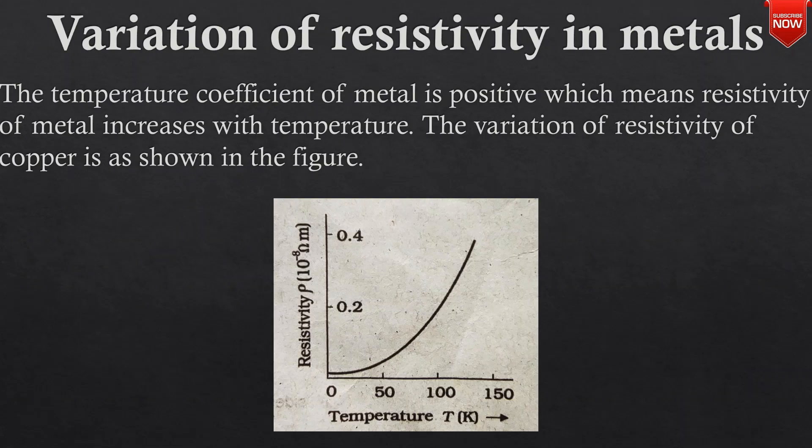The temperature coefficient of a metal is positive, which means that the resistivity of the metal increases with temperature. The variation of resistivity of copper is shown in the figure.